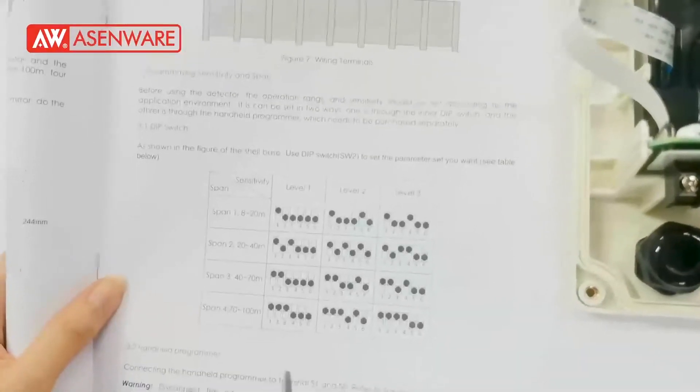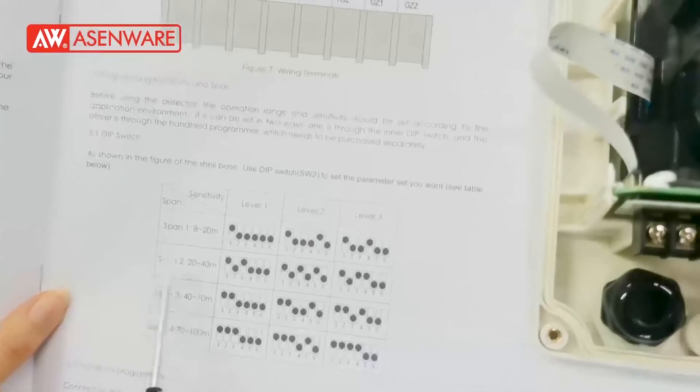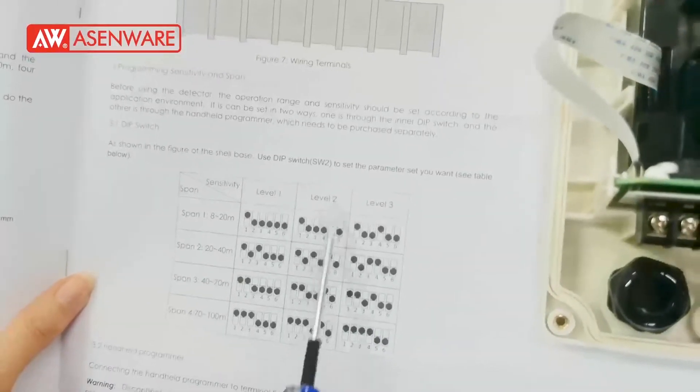Now we show the second span 2 and level 2 like this.